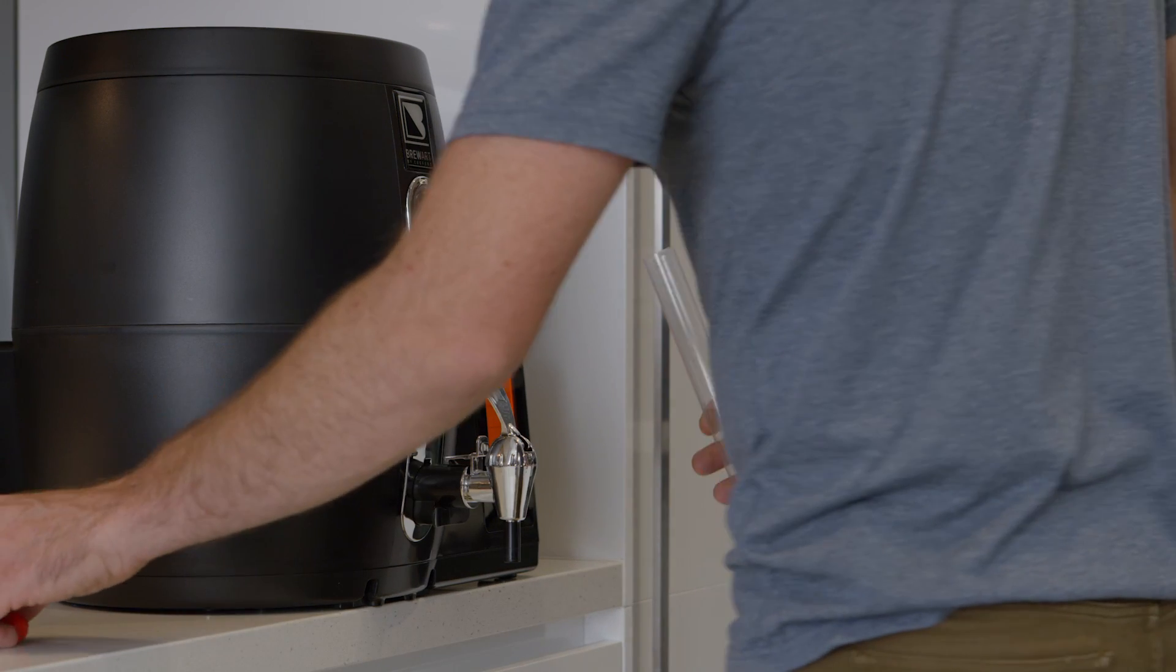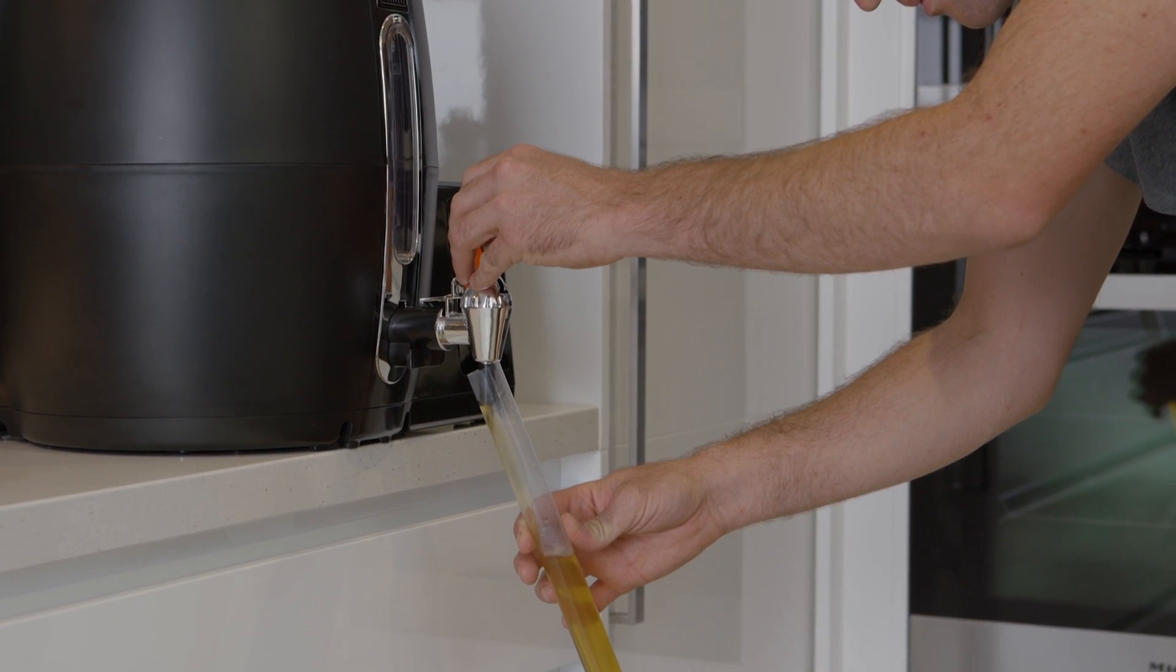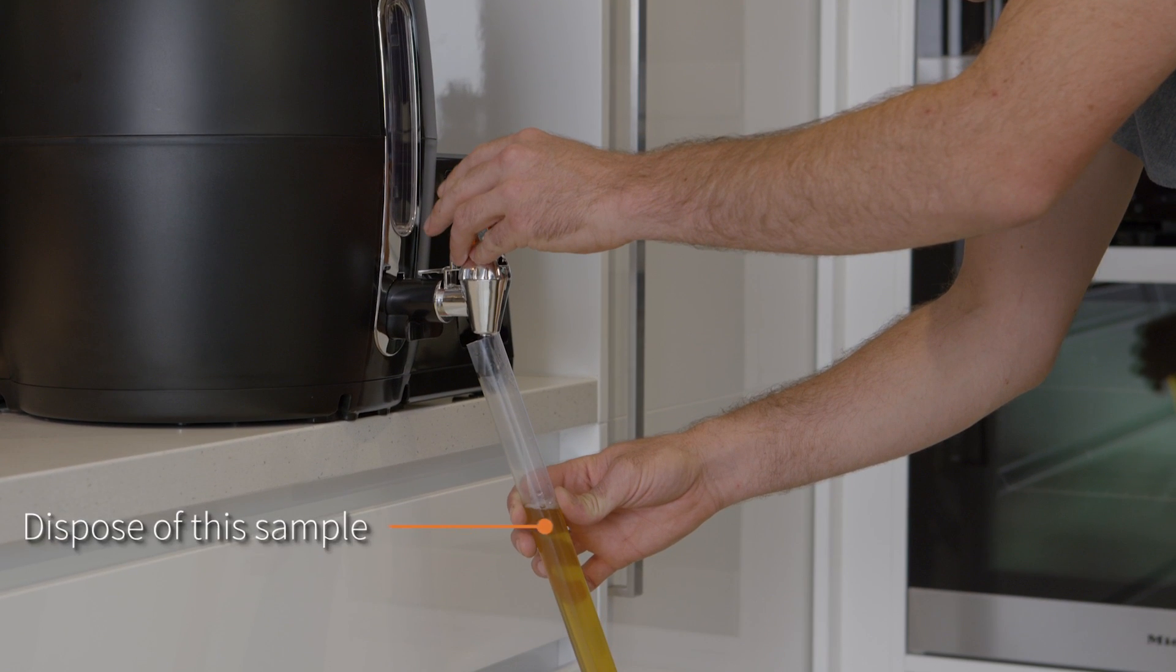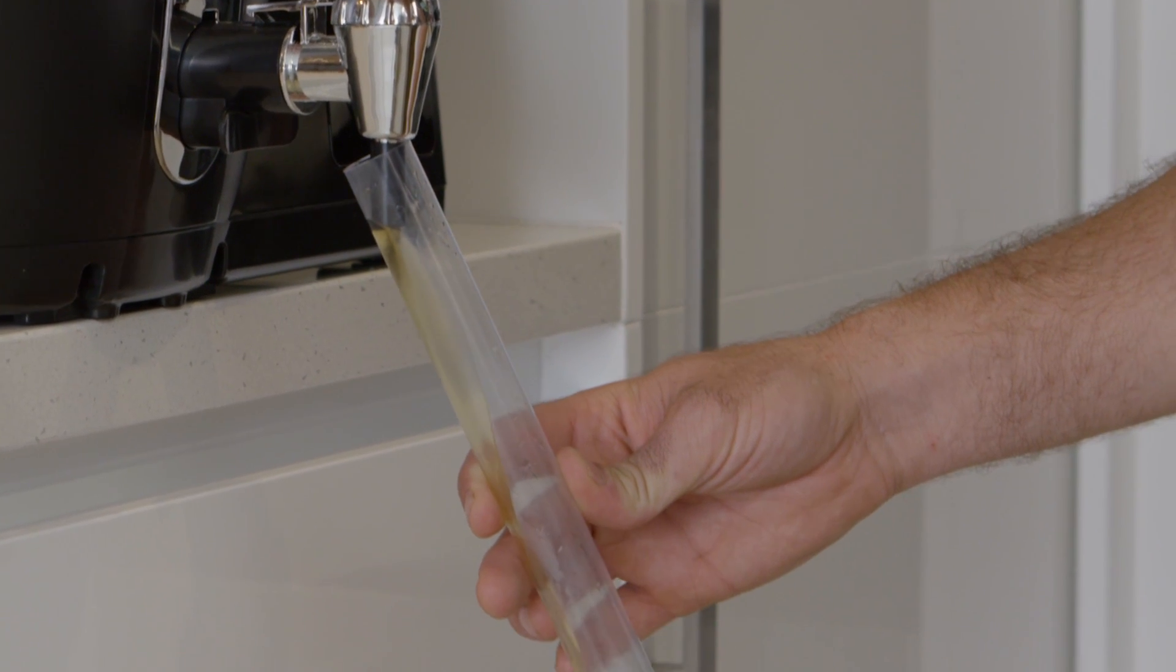To measure SG, you will need a hydrometer. Firstly, draw the brew from the tap to half fill the hydrometer tube and dispose of this. Next, draw another sample with enough brew to float the hydrometer.